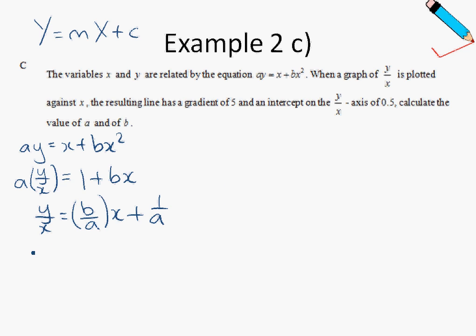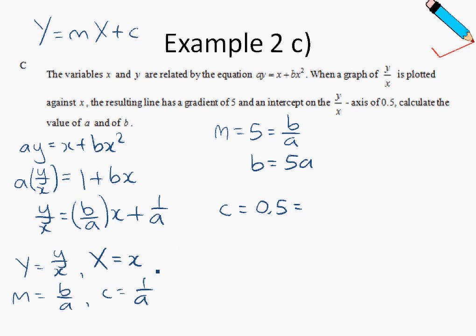So from here, I can see that my big Y is y over x. My big X is just x. My m is b over a. And then my c is 1 over a. So from the given information, the gradient of this graph, y over x plotted against x, has a gradient of 5. So m is 5 and m is b over a. So this means that b is 5a. The next piece of information I got, my c, which is my y intercept, is 0.5. And I found earlier that my c is 1 over a.